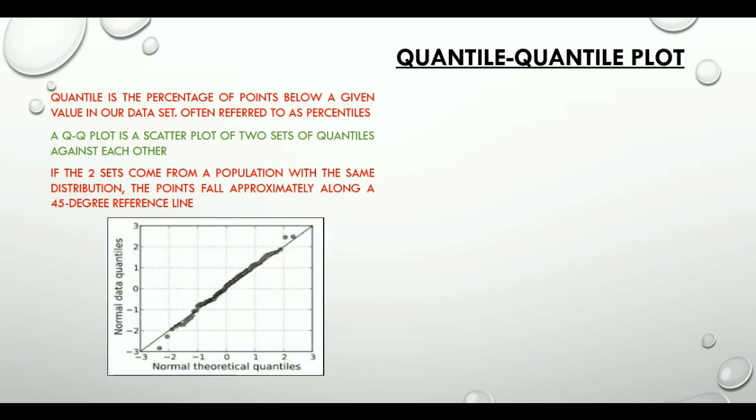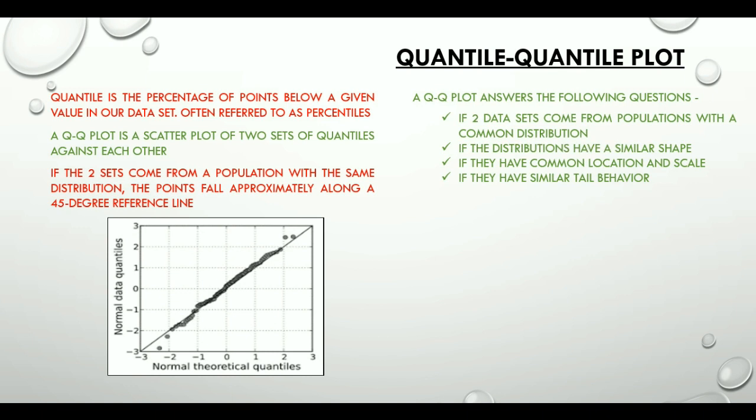The Q-Q plot helps us answer multiple questions: whether two data sets come from populations with a common distribution, do the distributions have a similar shape, if they have common location and scale, and do they show similar tail behavior?